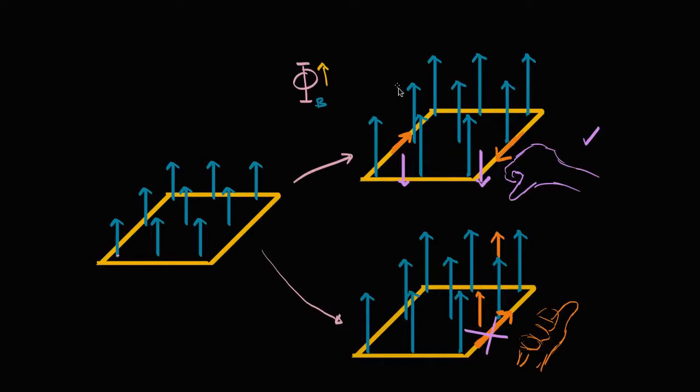So the induced magnetic field from the induced current goes against the change in flux. This makes sense, because we won't go into this never-ending positive feedback loop where the current keeps getting stronger and the flux keeps increasing. And this idea — that the orientation of the induced current will produce a magnetic field that counteracts the change in flux — this is Lenz's Law.